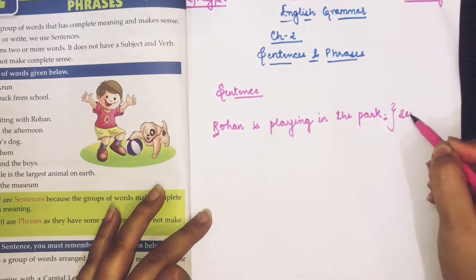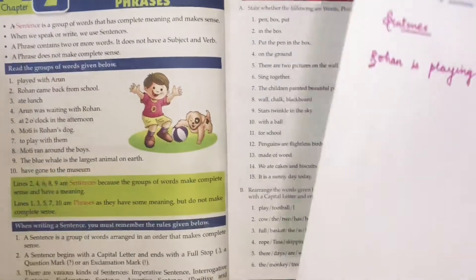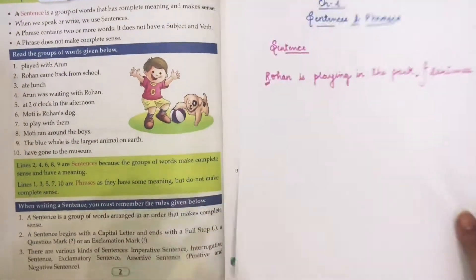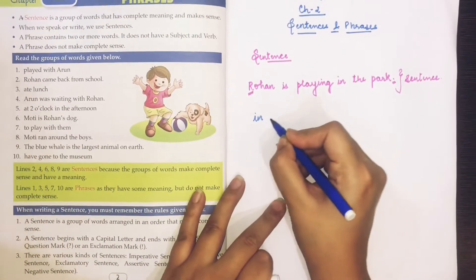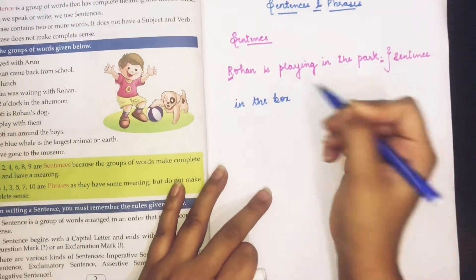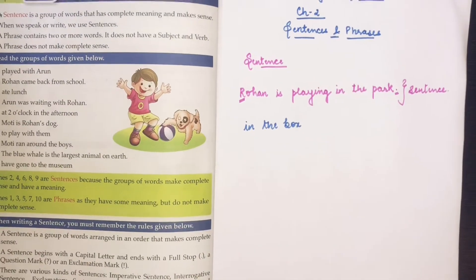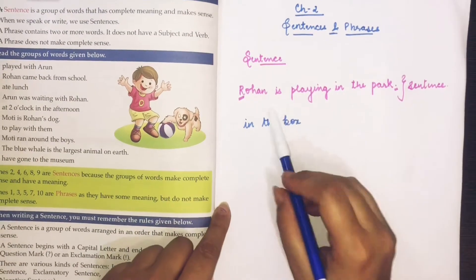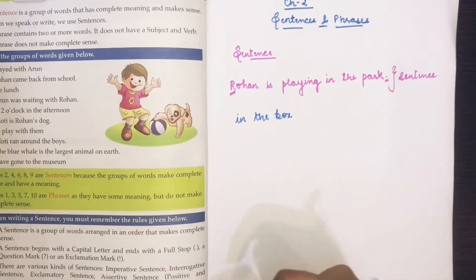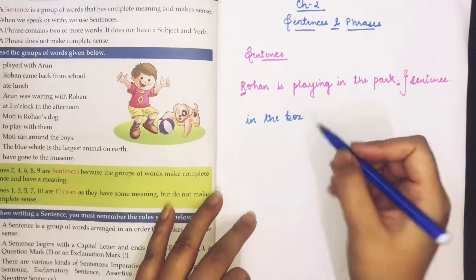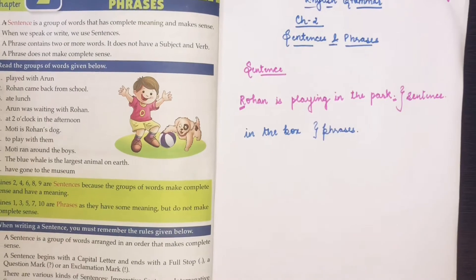Now, what do you mean by a phrase? If I say 'in the box' — this also means something, like where is your pen? I say 'in the box.' This is also a group of words, but it is not a complete sentence. It is not beginning with a capital letter. These types of short word groups are known as phrases.